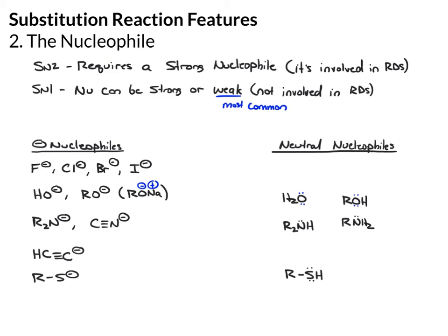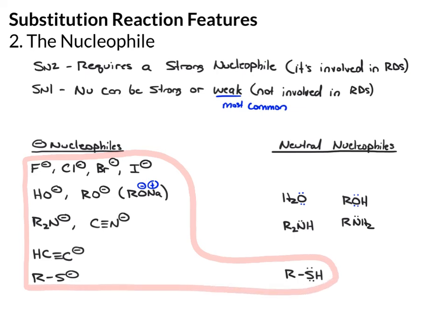Now, how do we break these down into strong or weak? There's a lot of gray area as far as relative strength. For example, in these negative nucleophiles, the acetylide ion is a really strong nucleophile, while the halides are not quite so much. But to generalize as far as what's strong enough to do an SN2: all of these negatively charged nucleophiles are strong enough for an SN2. In addition, the neutral sulfur nucleophile is strong. The rest of the neutral nucleophiles are weak.